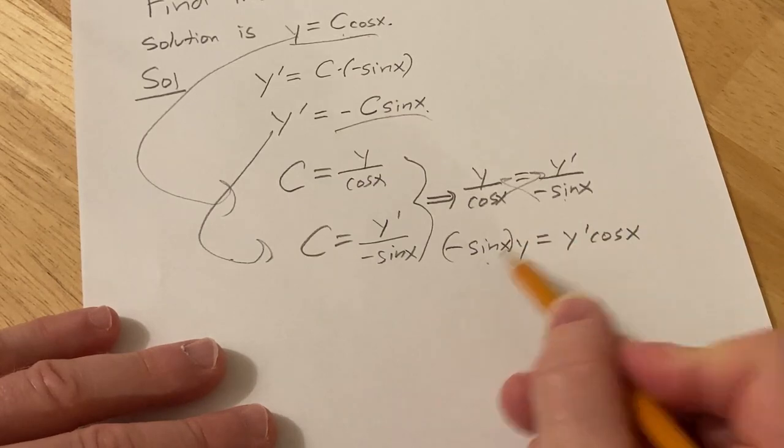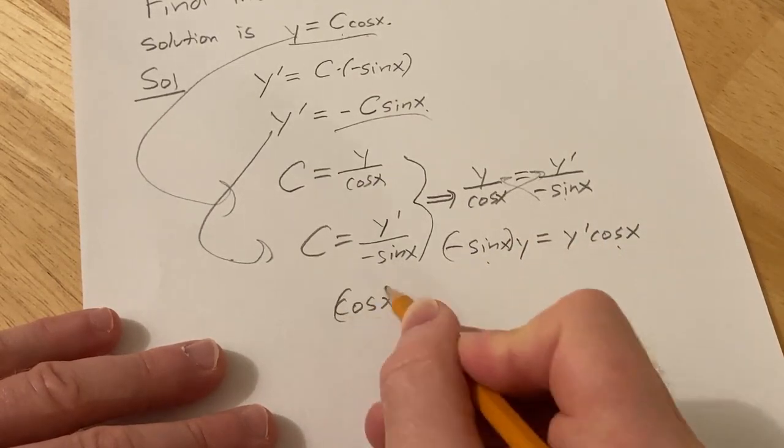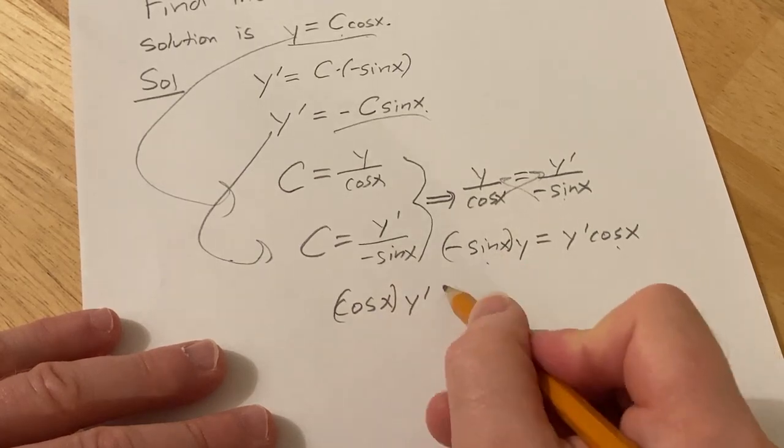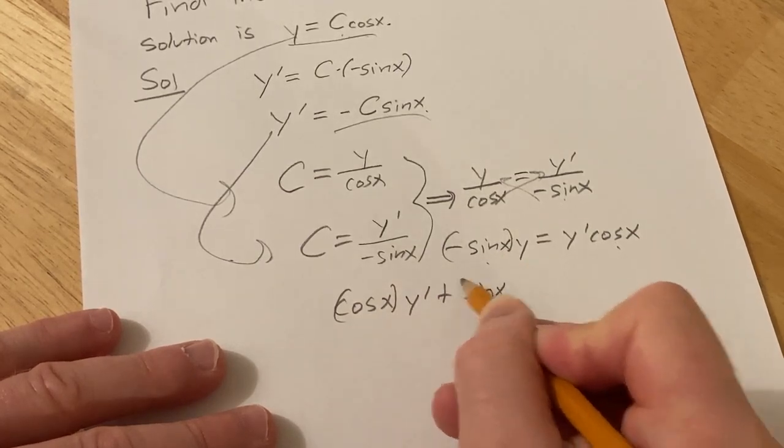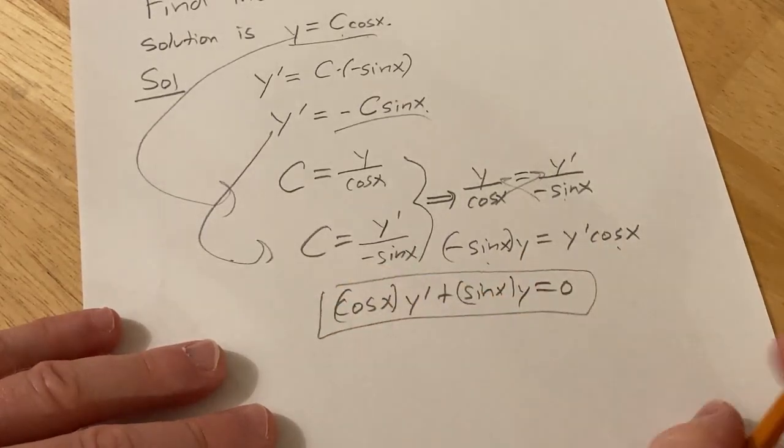If we add this to the other side we get cosine x times y prime plus sine x times y and that's equal to zero. And so that would be our differential equation.